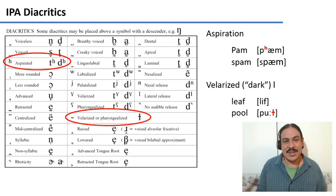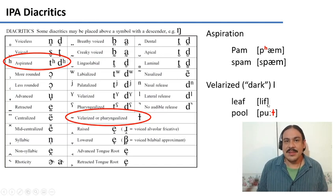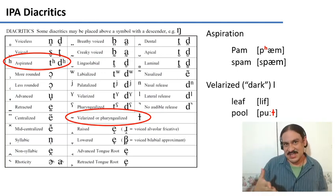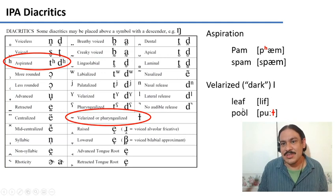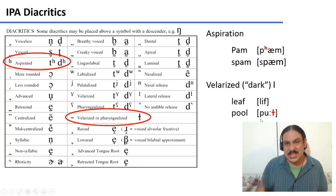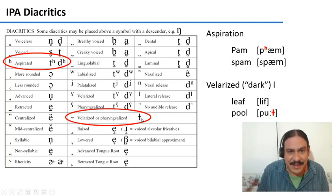Another English consonant that needs a modification is the velarized or dark L. There are actually two L's in English: the one in 'leaf' where your tongue is towards the front, and the one in 'pull' where the tongue goes towards the back towards the velar region. Say them quickly so you can notice your tongue going back and forth: 'leaf,' 'pull.' The dark L, as in 'pull,' is called the velarized L and it has a little curl in the middle of its symbol.